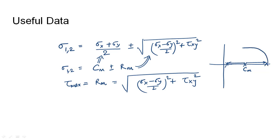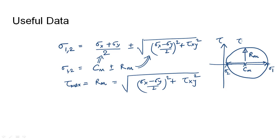Connecting the dots on the Mohr circle, the maximum value of shear stress appears on the y-axis and equals the radius of the Mohr circle. The smaller value on the x-axis is the minor principal stress and the larger value is the major principal stress.